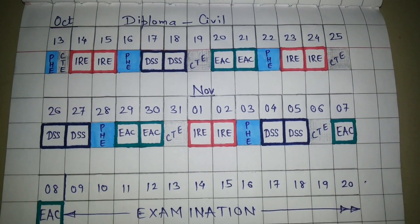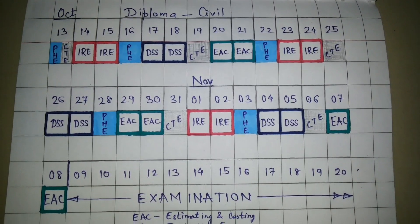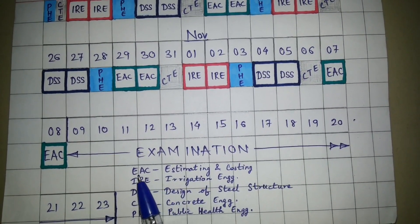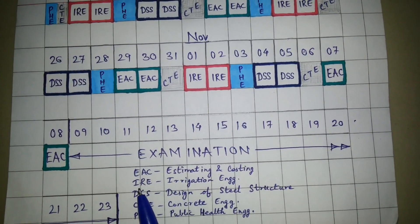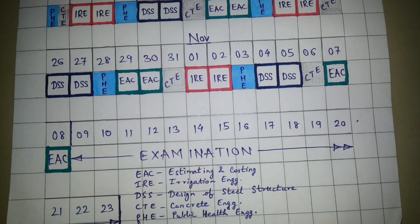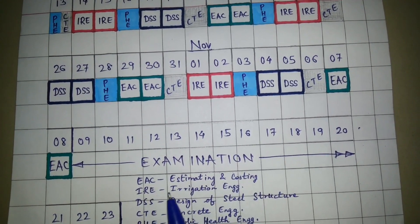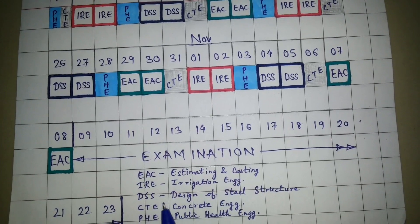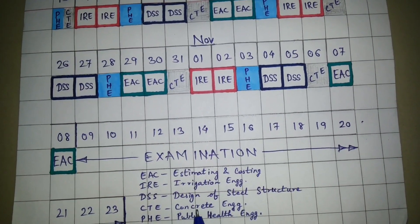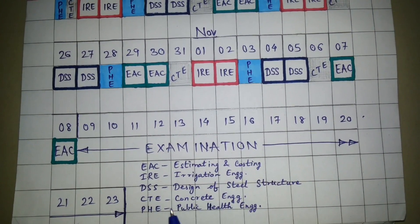Today's topic of discussion is the timetable for diploma civil engineering. There are five subjects: EAC (Estimating and Costing), IRE (Irrigation Engineering), DSS (Design of Steel Structure), CTE (Concrete Engineering), and PHE (Public Health Engineering).